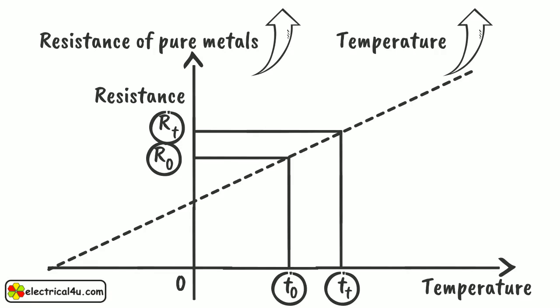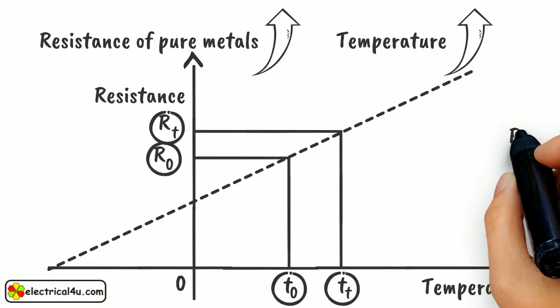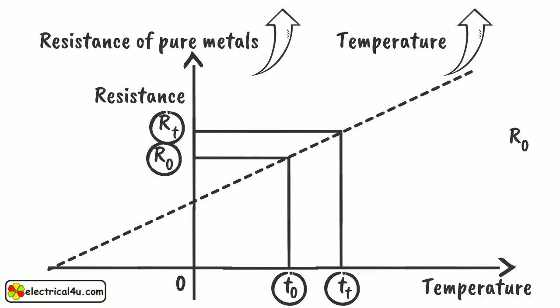Due to change of temperature, how much resistance will be changed depends on the actual resistance of the conductor at initial temperature. In a simple manner, if resistance of the conductor is more, the change will be more, and if resistance of the conductor is small, the change will be small. Hence, the change in resistance due to change in temperature is found to be directly proportional to the initial resistance.